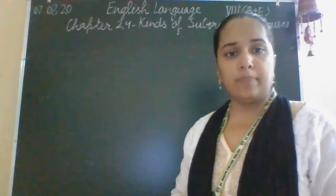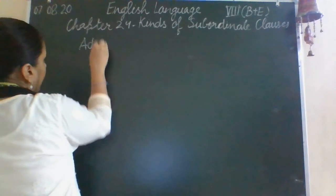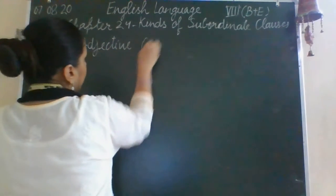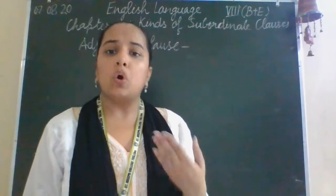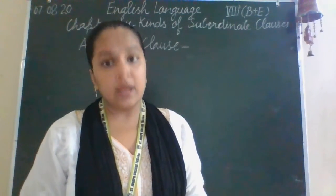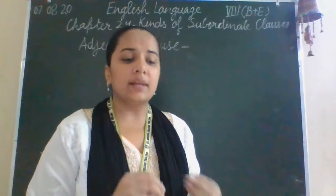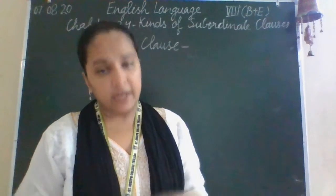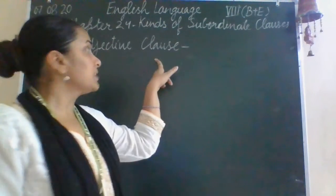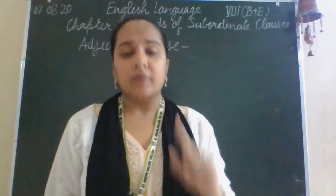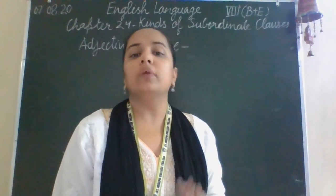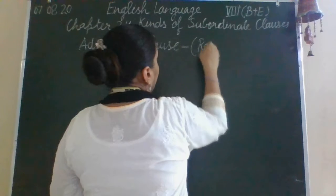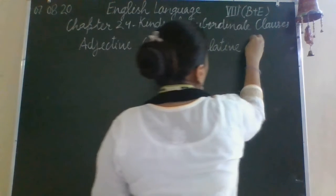Another part of the subordinate clause is the adjective clause. An adjective clause describes or modifies a noun or pronoun and is introduced by a relative pronoun or a relative adverb. To use the adjective clause in a sentence, we use either a relative pronoun or a relative adverb. An adjective clause is also known as the relative clause.